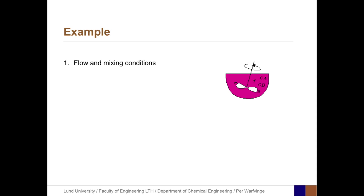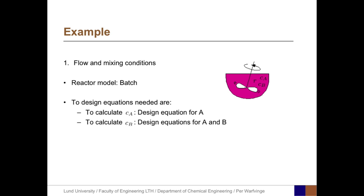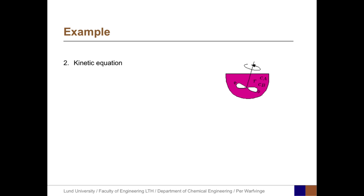The first step is to clearly define the flow and mixing conditions. We have a batch reactor, and the design equations we need to solve are: to calculate C_A, we solve the design equation for A; to calculate C_B, we solve both the design equation for A and for B, since C_A is included in the kinetic equation used to calculate the formation of B. The mass balance equations become R_A equals dC_A/dt, and R_B equals dC_B/dt. The second step is to define the kinetic equations. This reaction is first order with respect to C_A, so the rate equation is K times C_A. The rate equation for A equals negative K times C_A, while the rate for B, which is produced, equals K times C_A.